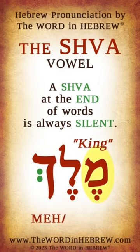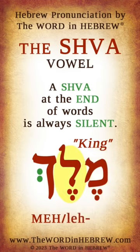The base sound of mem is m, plus an e vowel makes me. The base sound of lamed is l, plus an e vowel makes le.